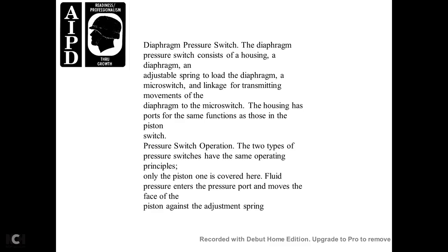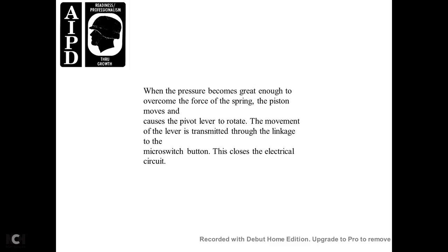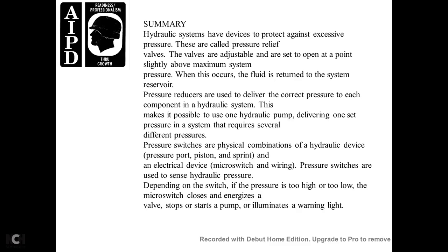Pressure Switch Operation. The two types of pressure switch operate on the same principle; the only difference is that one uses a piston and the other a diaphragm. Fluid pressure enters the pressure port and moves against the face of the piston against the adjusting spring. When the pressure becomes strong enough to overcome the force of the spring, the piston moves, causing the pivot lever to rotate. The movement of the lever is transmitted through linkage to the micro-switch button, which closes the electrical circuit.